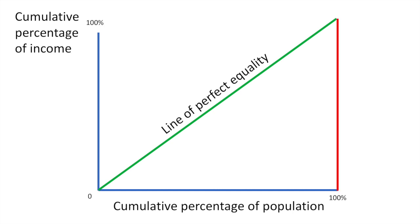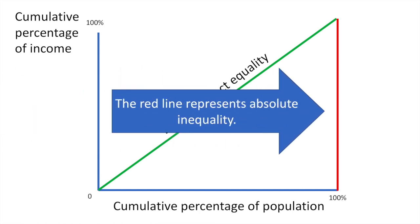Now suppose that only the 100th household had all of the country's income. The other 99% in this case have none of the income, and this 1% of the population accounts for all of the income in the country. This is represented by the red line, which represents absolute inequality. Thankfully, most societies don't operate like this.